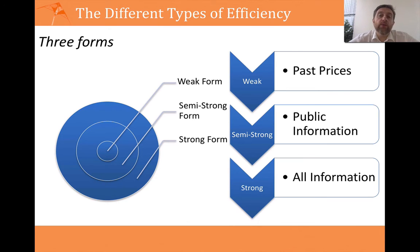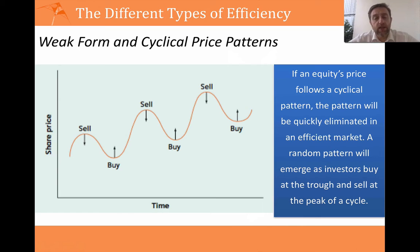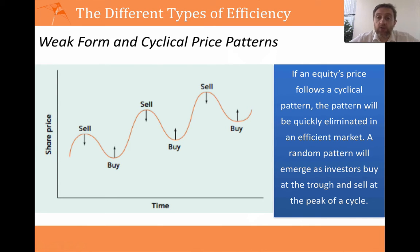We're going to talk about empirical tests of the different types of efficiency in the next video. In this video we're just focusing on the definition. Let's look at a bit of insight into what we mean by the different types of market efficiency, starting with the weak form. This is one that a lot of people believe actually happens — that we get cyclicity in prices, or patterns in prices. There's a whole industry that has grown around what we call technical analysis, which is the study of patterns in prices.